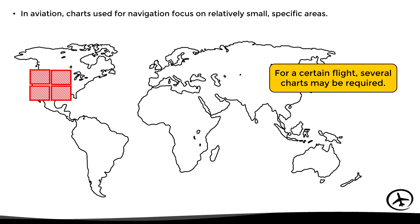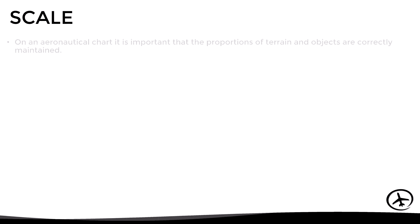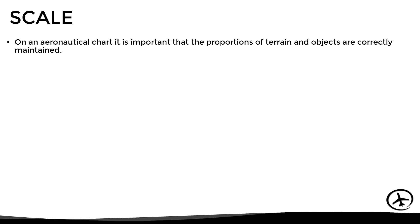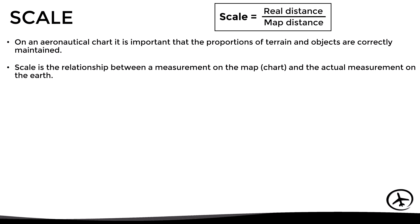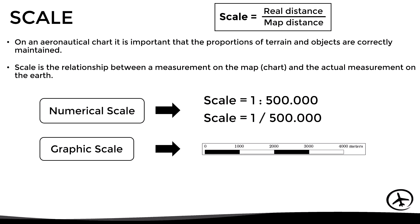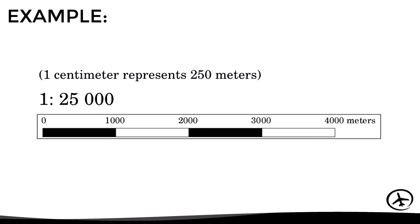Moving on to scale: on an aeronautical chart it is important that the proportions of terrain and objects are correctly maintained. The scale is the relationship between a measurement on the map or chart and the actual measurement on the earth. Its formula is simply: real distance divided by map distance. All maps publish the scale with which they were designed, and this can be found in different formats — a numerical scale, a graphic scale, or a plain text scale. This information is useful when determining distances on a map without a plotter.